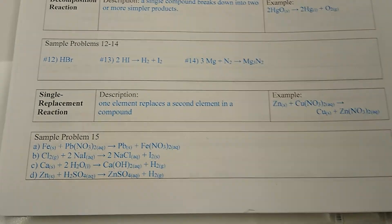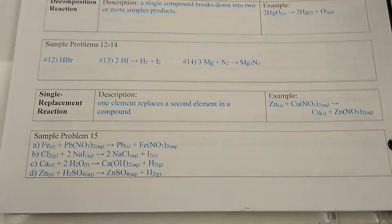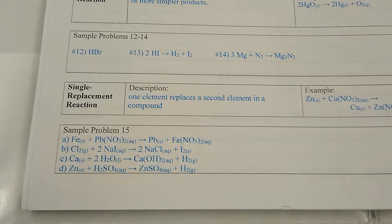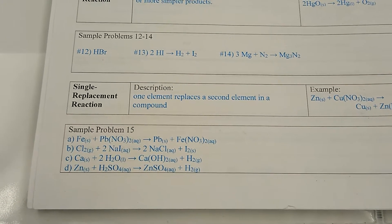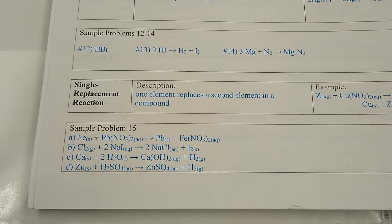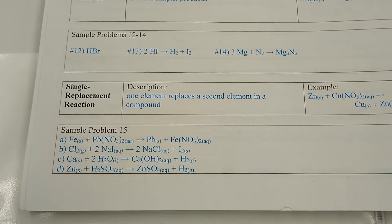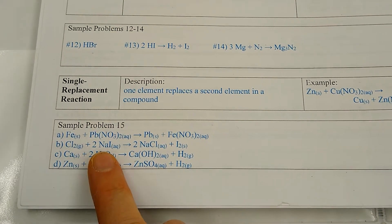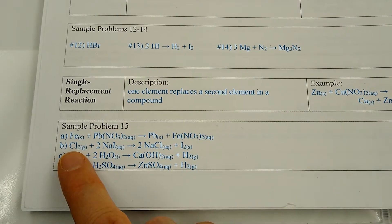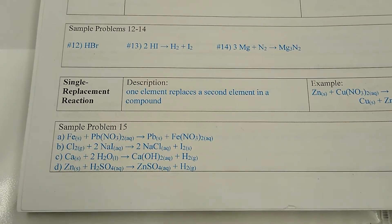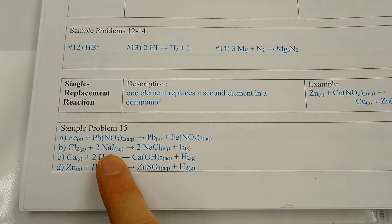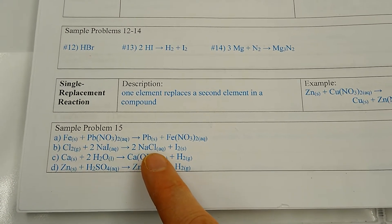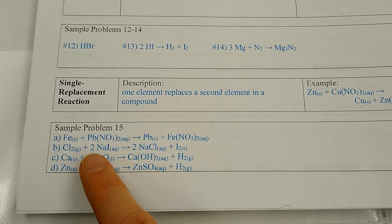Sample problem 15 gave you the first half of the arrow and you had to fill in the second half. Iron plus lead nitrate: lead gets kicked out, iron steals the partner, we get iron nitrate. Keep iron at the same charge as lead — two nitrates — and it's already balanced. On the second one, chlorine and sodium iodide: chlorine kicks iodine out because metals and nonmetals bond with each other. We get sodium chloride (plus one, minus one — they balance) and then we add coefficients of 2 to balance the overall reaction.